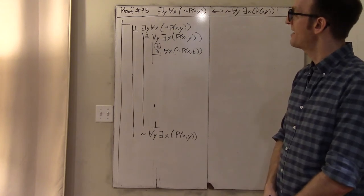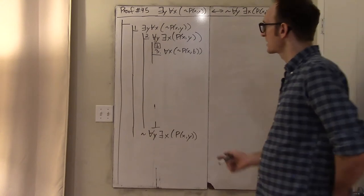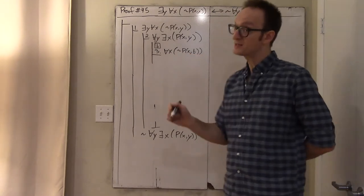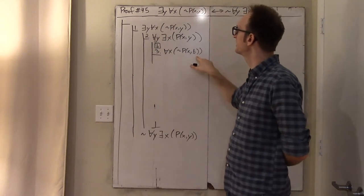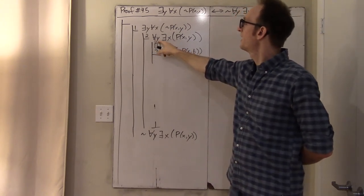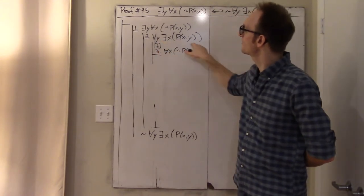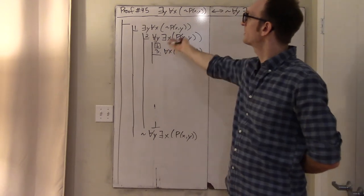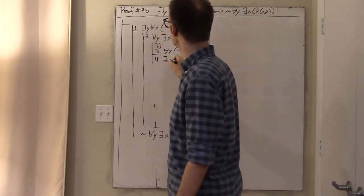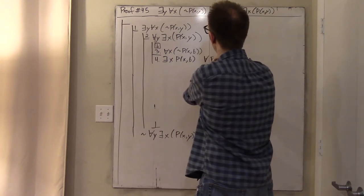What do I know about B? I know that for all x, not p of x, B. Now I have lines two and three. Line three says everybody didn't punch B — B is someone that no one punched. Line two says for everyone there is someone that punched them. So two and three are obviously contradictory. The clear thing to do is to stick B in for Y in number two, giving: there exists an x such that p of x, B — universal elimination on line two.